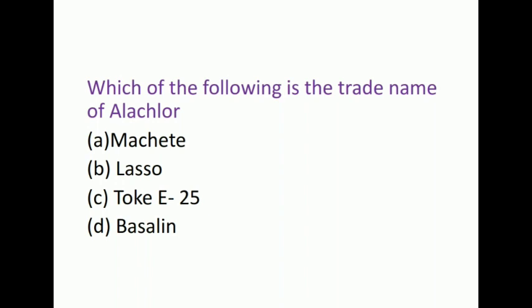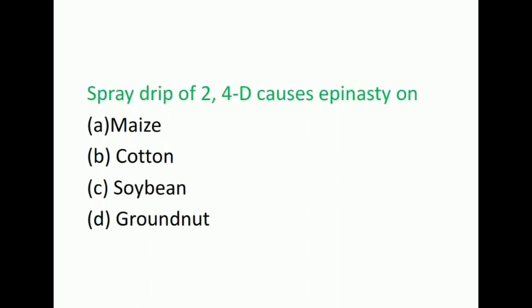The next question is: Which of the following is the trade name of alachlor? The options are Machete, Lasso, Toke E-25, Basalin. The answer is Lasso. It belongs to the amide group and it is a very effective pre-emergence herbicide in soybean and maize. Here the student will be confused with alachlor and butachlor. Just remember that alachlor and Lasso both start with L.